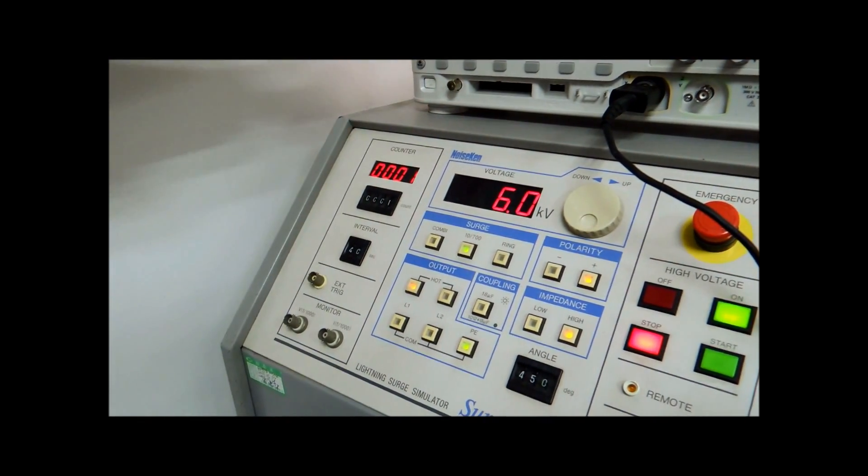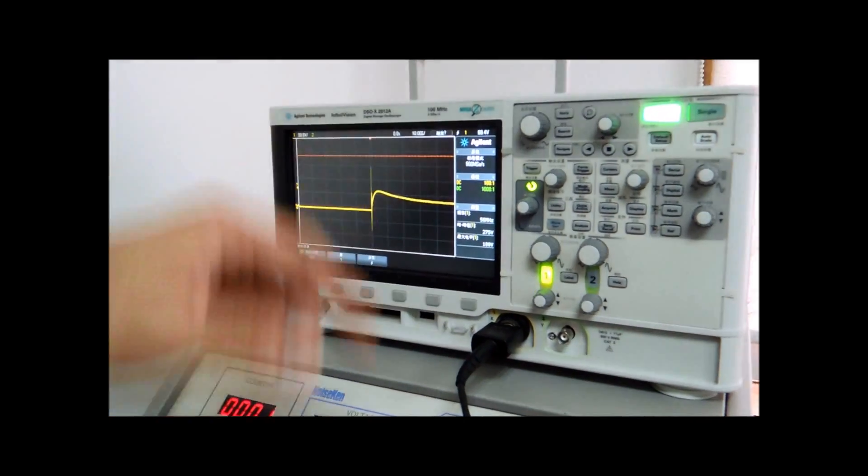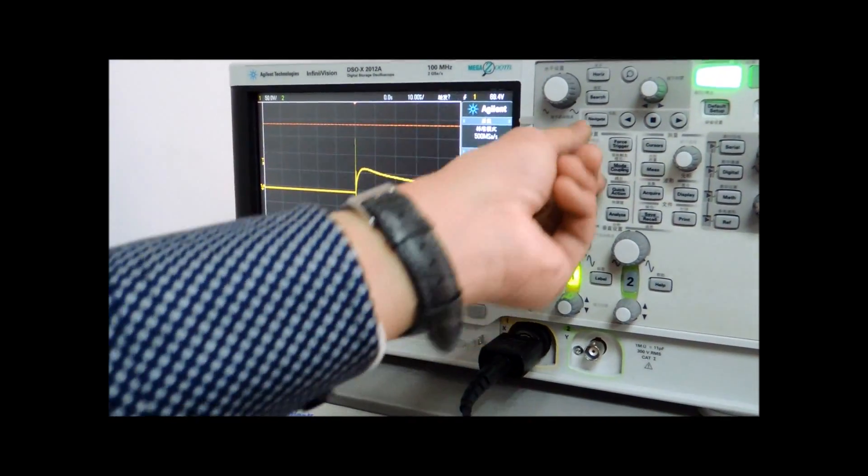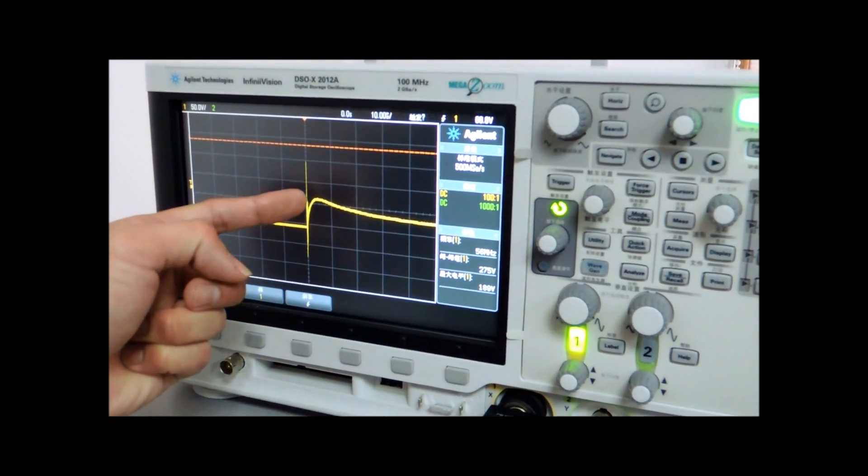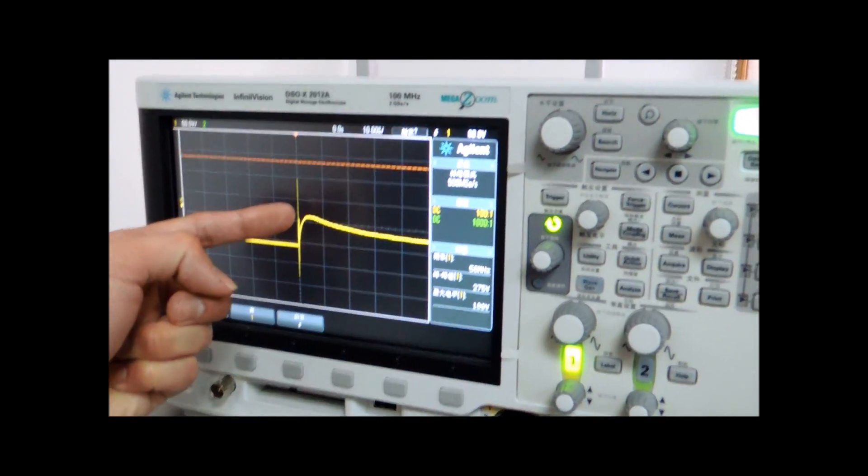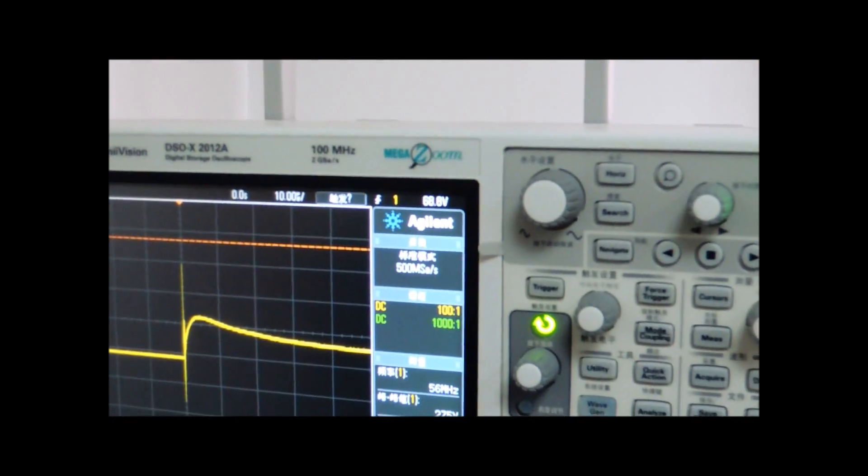Okay, and this machine is from Agilent Technology, I believe everyone knows about it. It has clearly shown that we have spiked at 68.8V. Yet, our product is still functional.